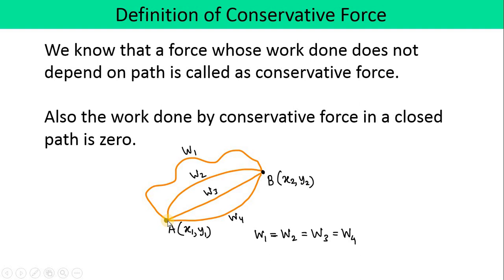Also, the work done by a conservative force in a closed path is zero. For example, if a particle goes from A to B via path 2 and returns from B to A via path 4, since W2 and W4 are equal but opposite in direction, the total work done on the closed path becomes zero. These two statements are the properties of a conservative force.